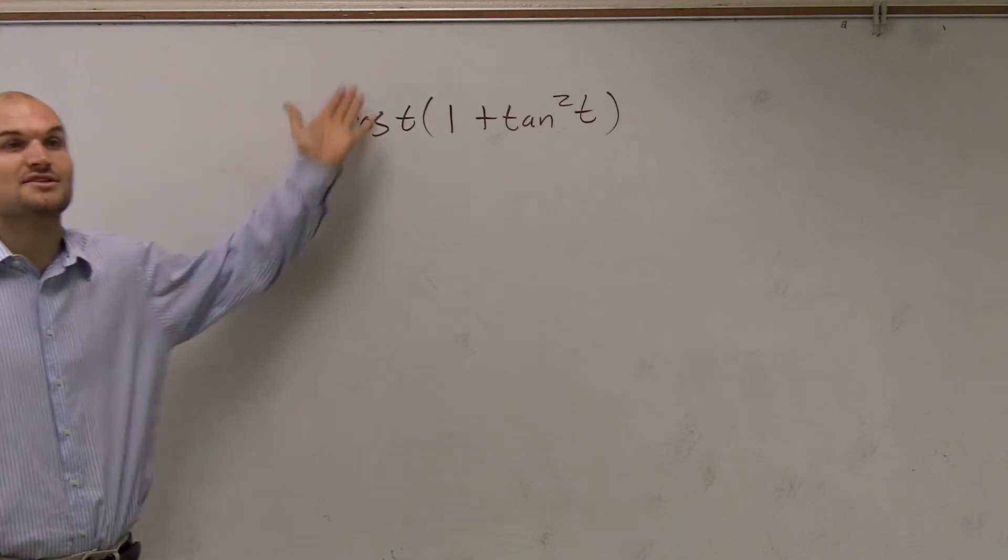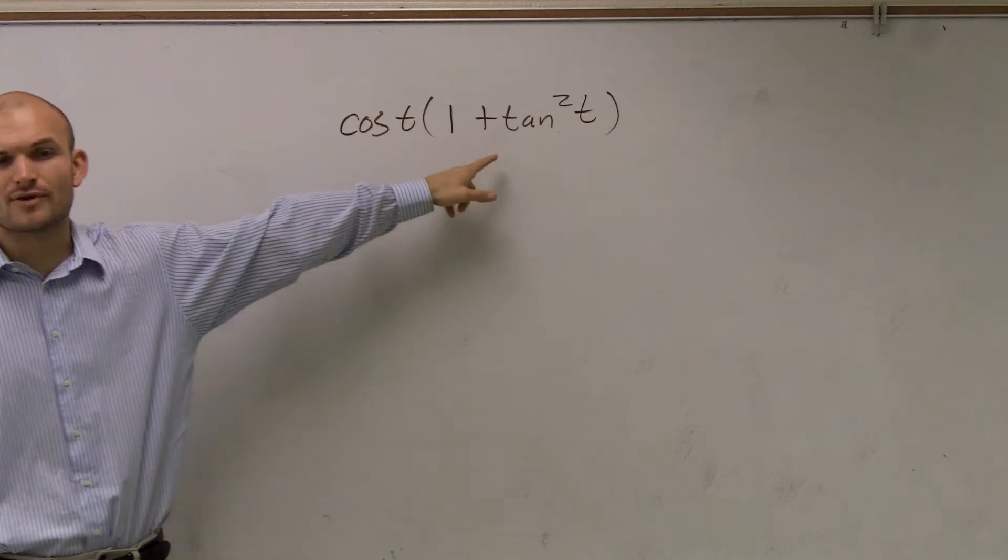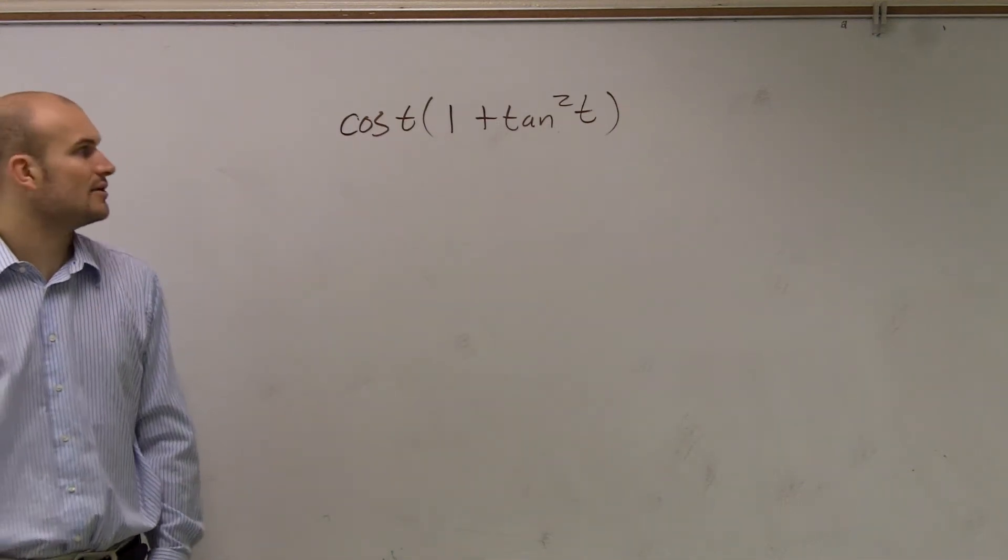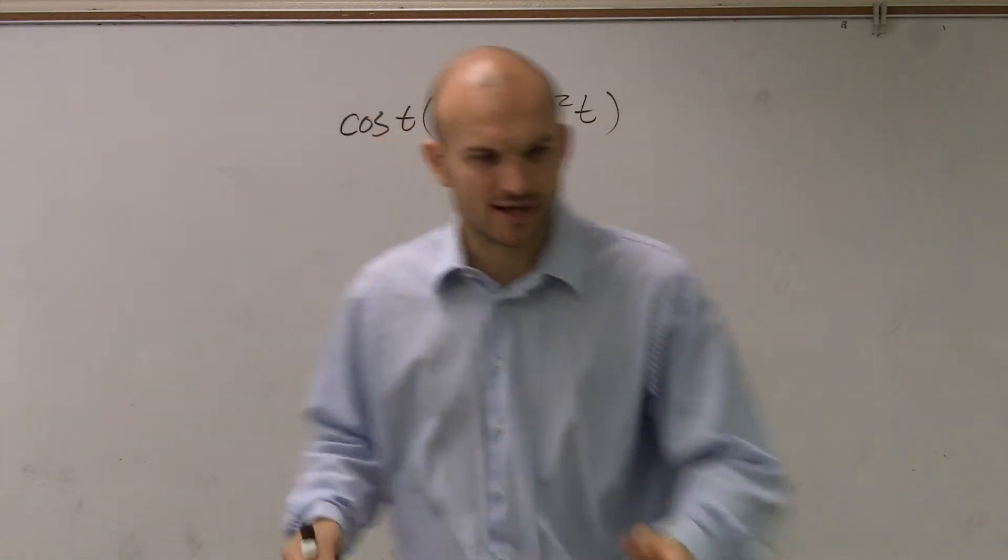One thing you guys can look at is to multiply, right? But even before multiplying, I can say, what can I write with my 1 plus tangent squared of t? I can transform this. Maybe I might make it simpler. So I go ahead and look at my trig identity.